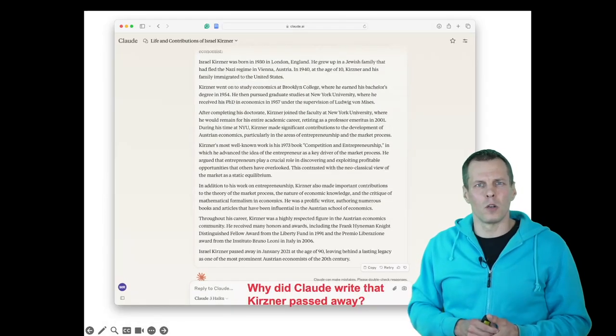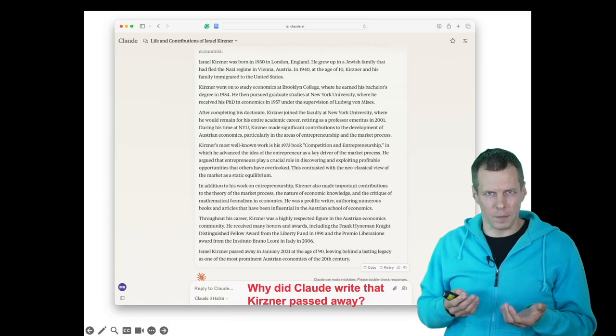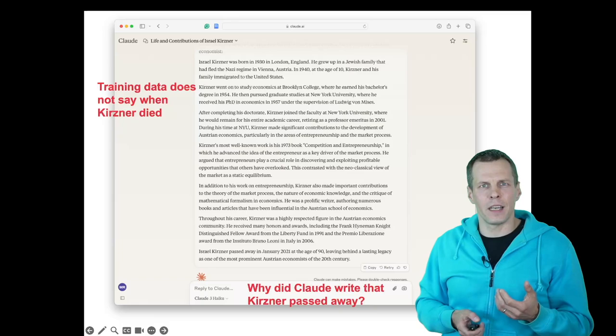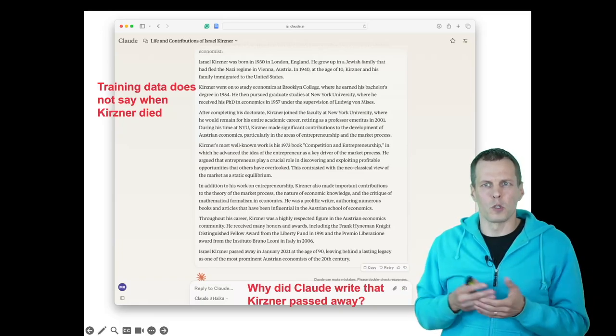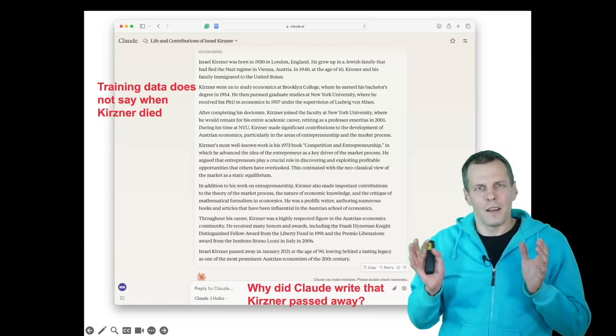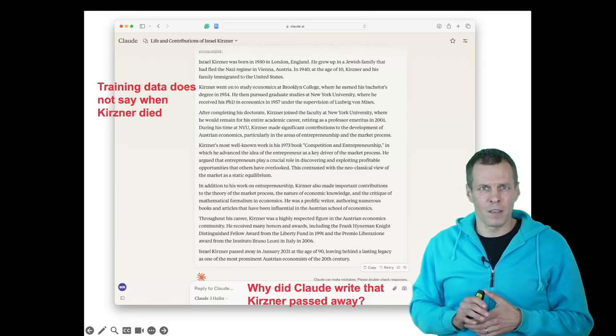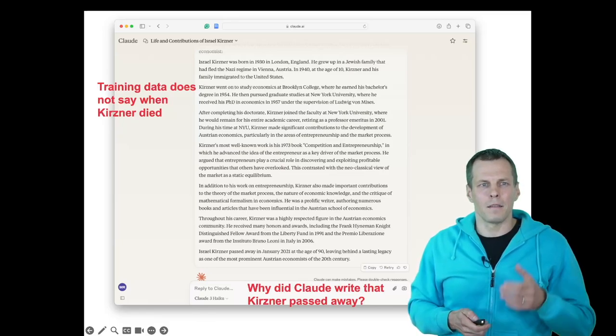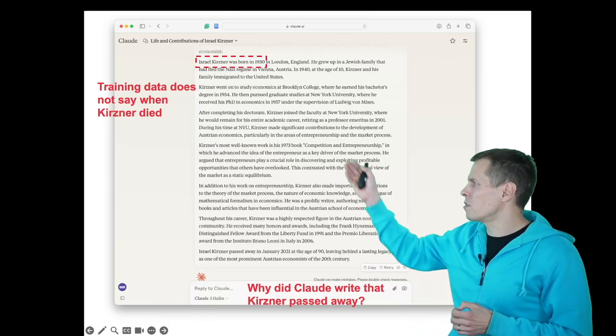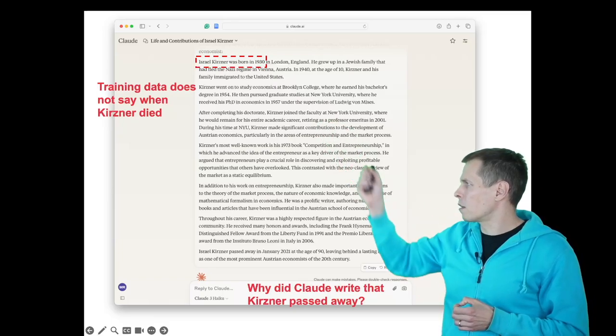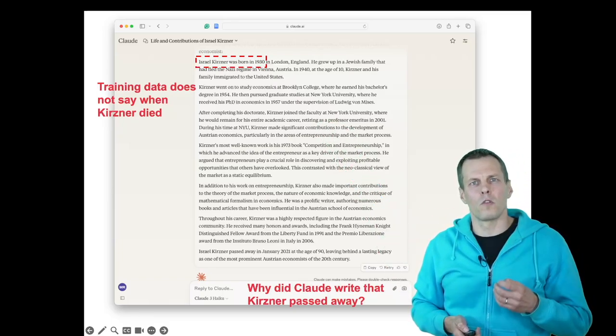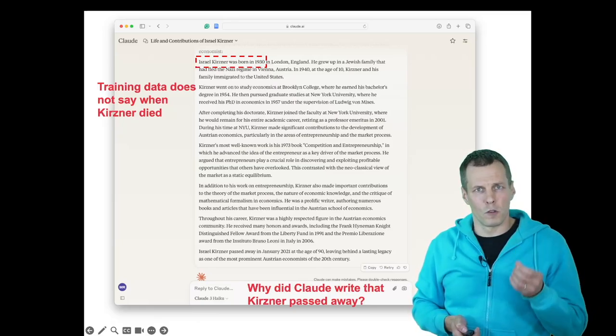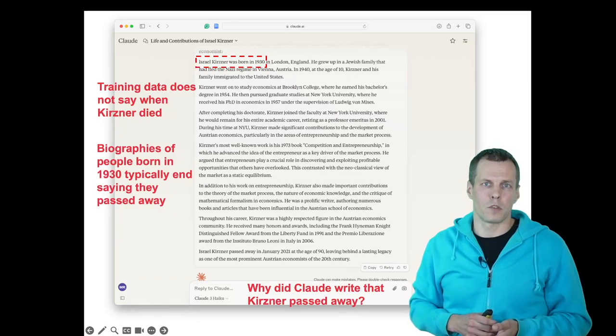Now we get to our look at why did Claude predict incorrectly. And this is because of extrapolation. The training data for Claude, when it was trained using most of the internet, does not contain information about the death of Kirzner. And it's natural because he is still alive. And here we have that the person died, was born in 1930. And the training data also contains lots of biographies of people born in 1930.